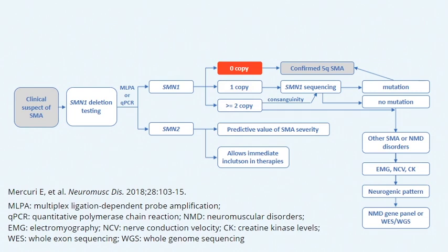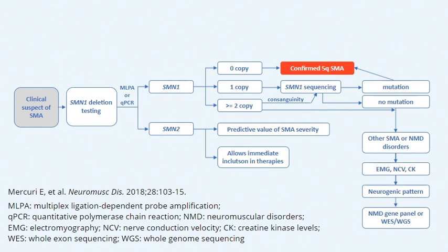Here we can have zero copies, which means that the patient has a homozygous deletion, and it confirms the SMA diagnosis. This represents 95% of the patients.